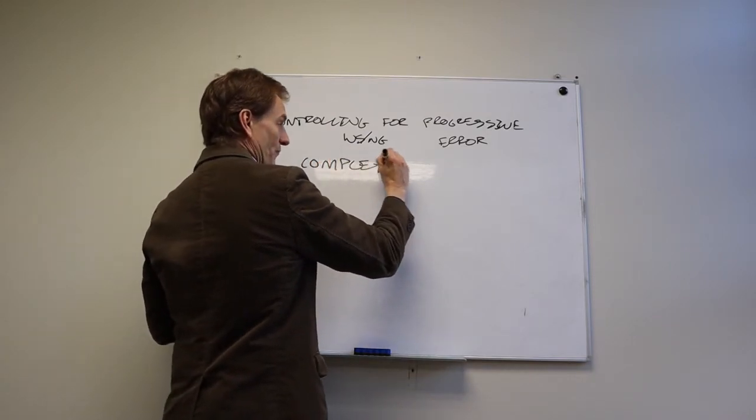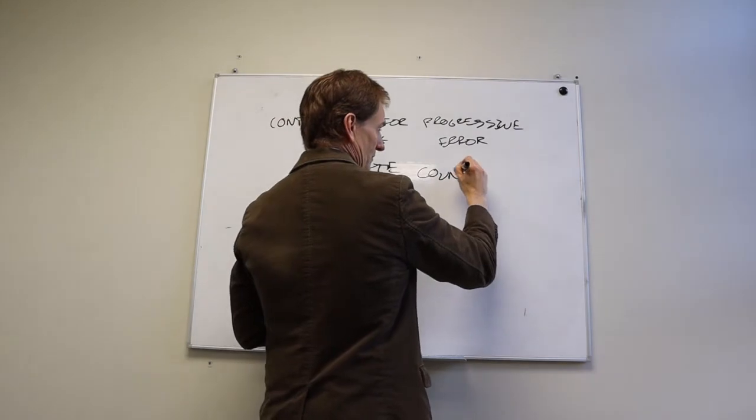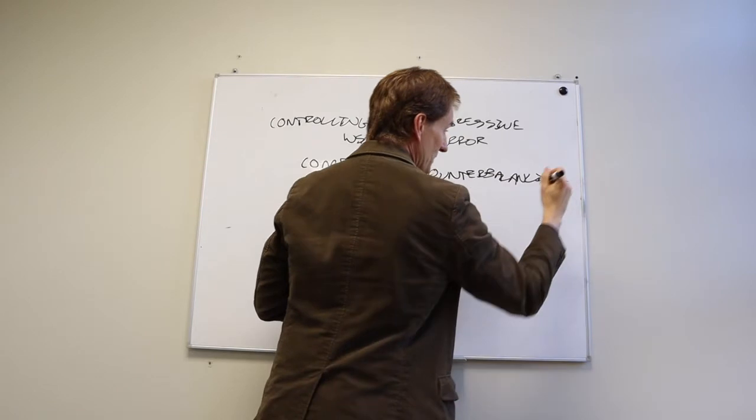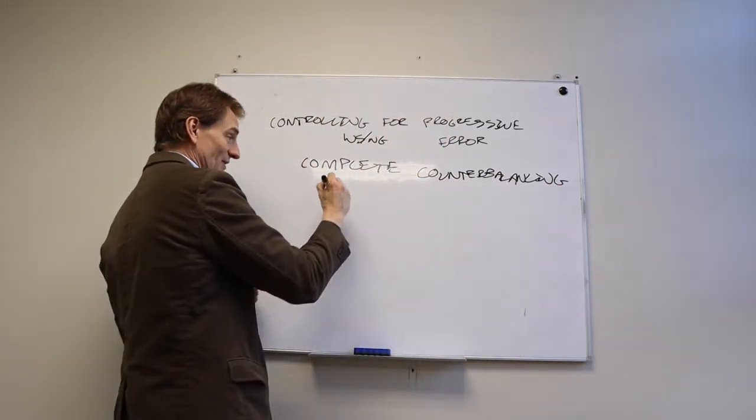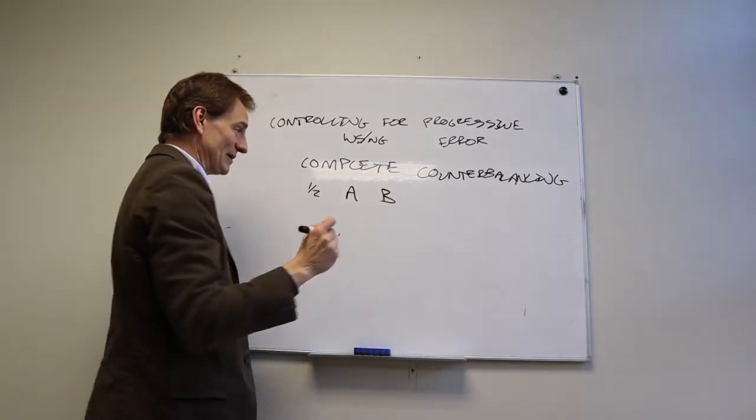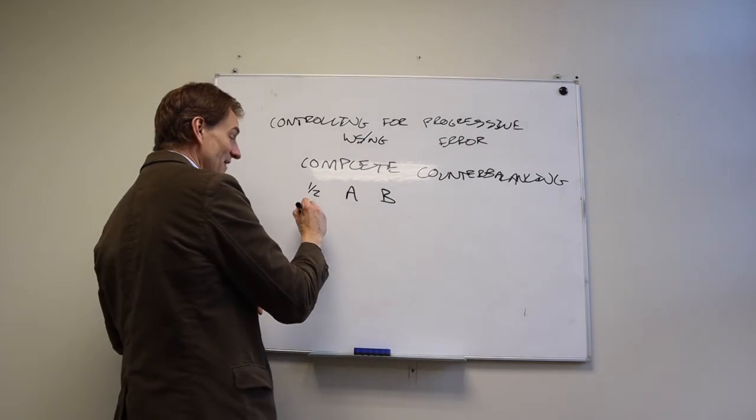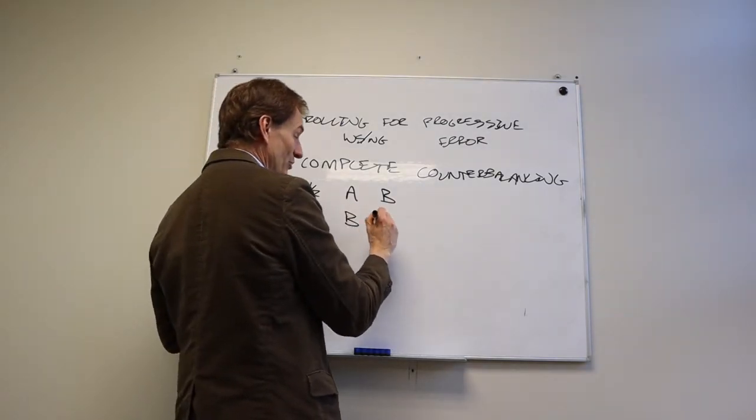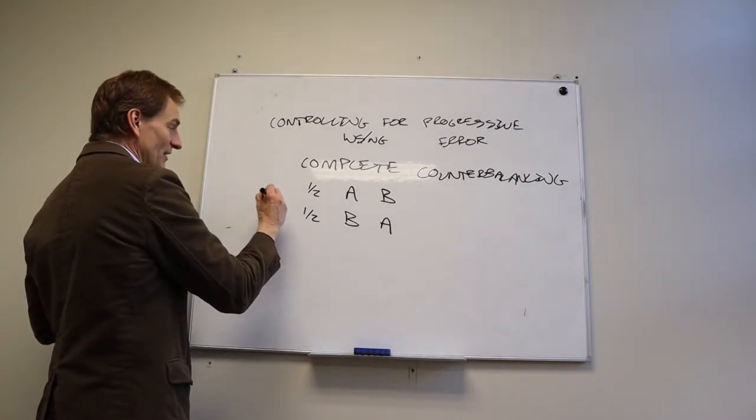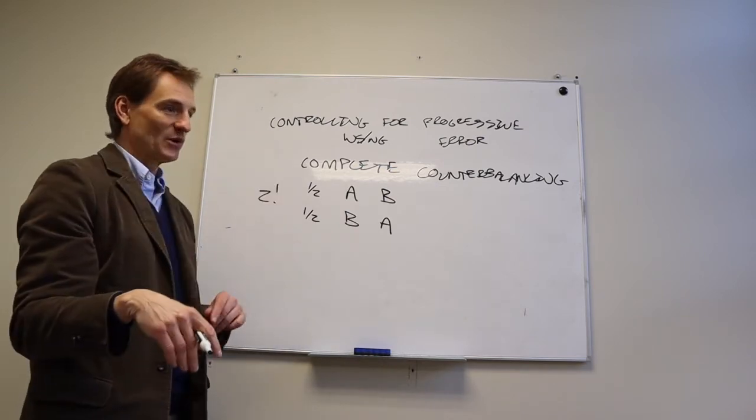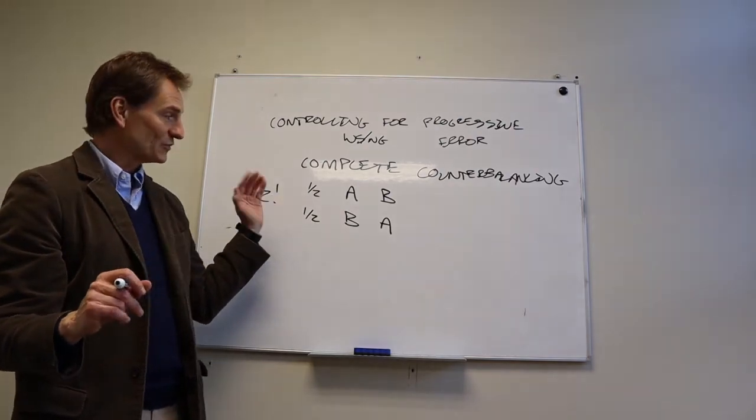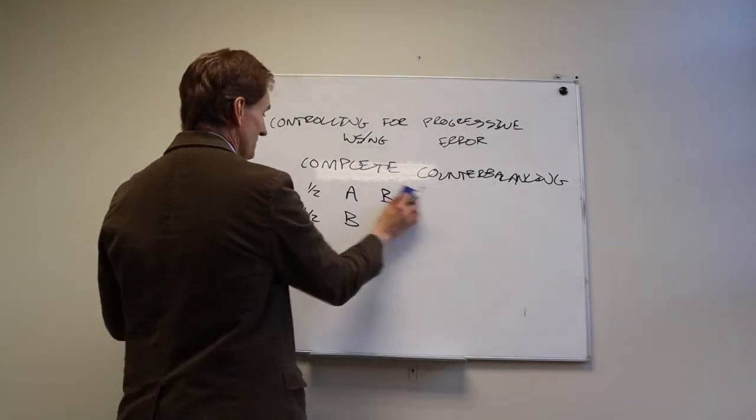Complete counterbalancing is used all the time. So let's go back to our original example. Let's say we have two treatment conditions, A and B. What we do is we run half of our participants A and B, and then the other half B and A. And so the number of treatment orders that we have is always the number of treatment conditions we have factorial. So two times one, and so therefore we have two different treatment orders.